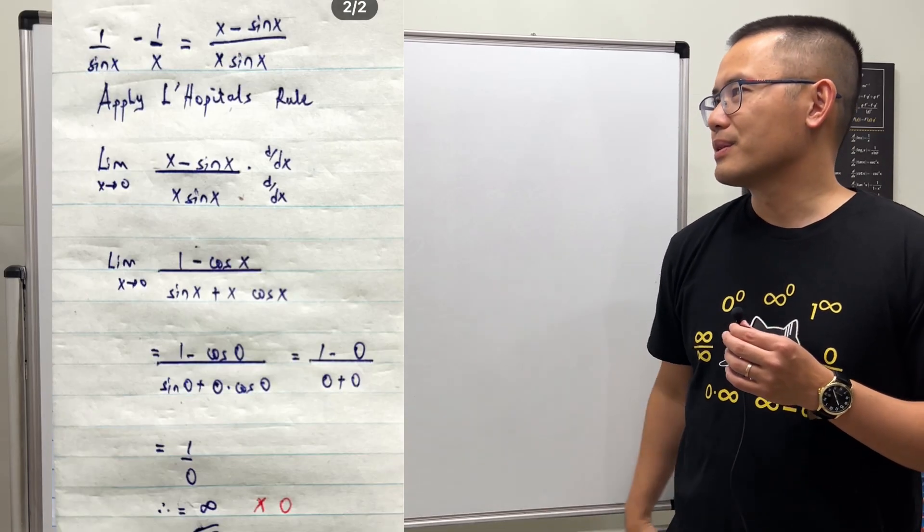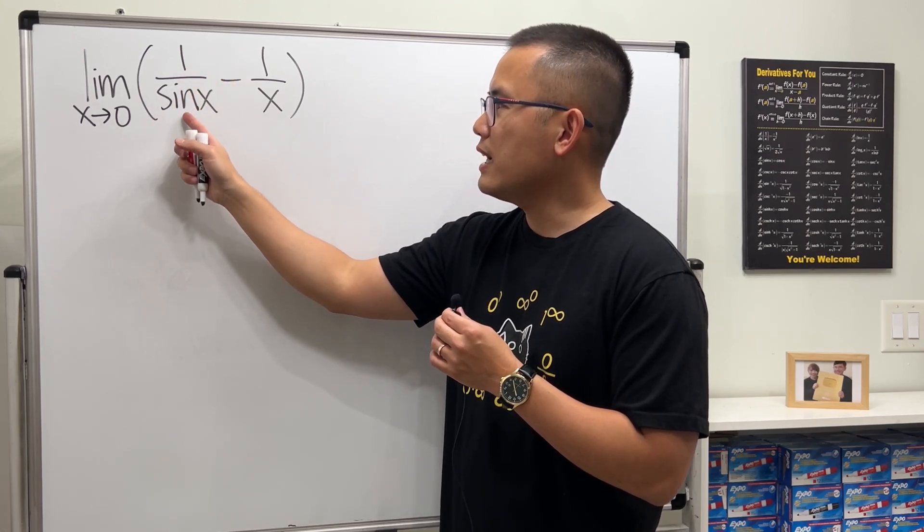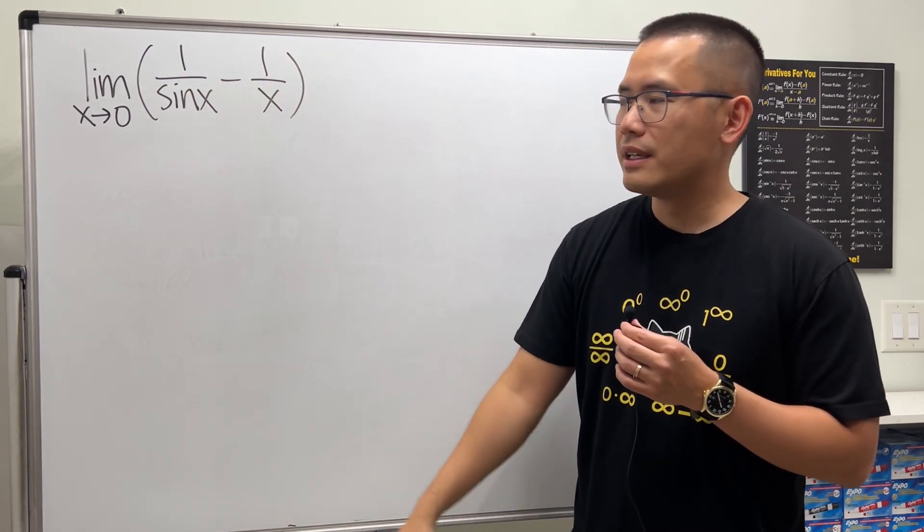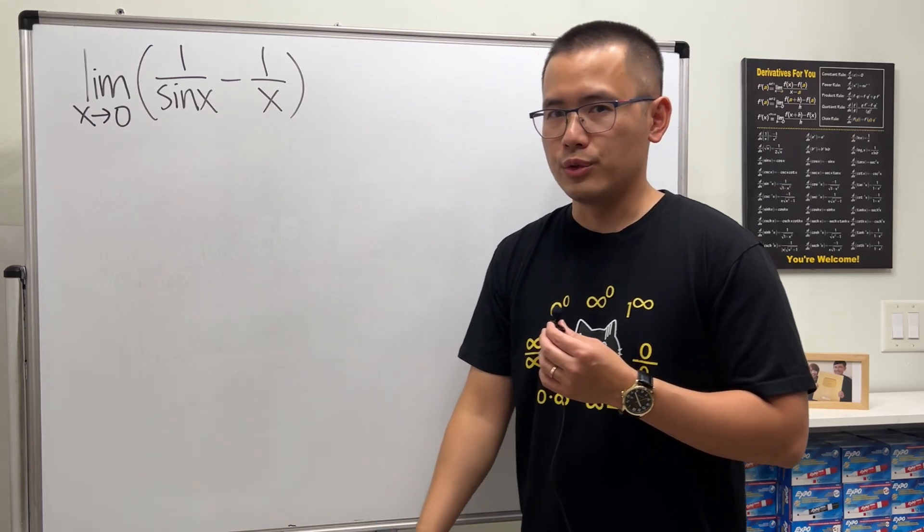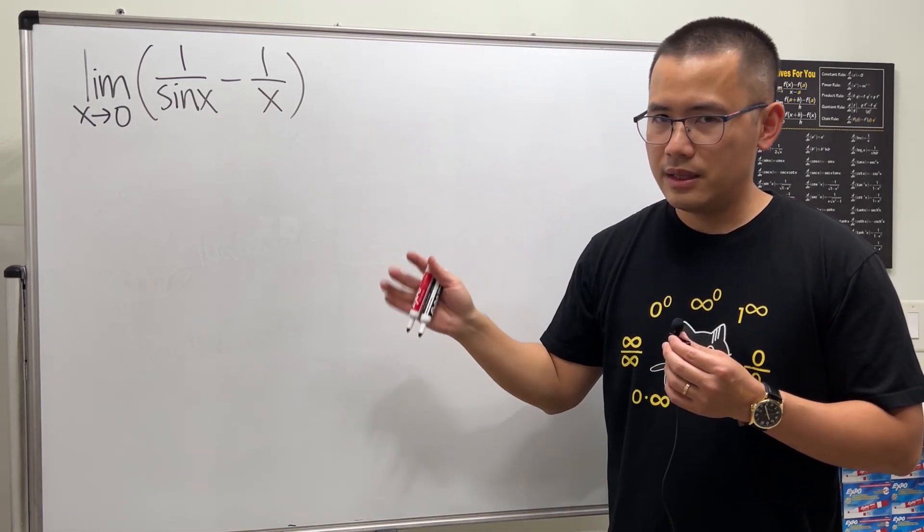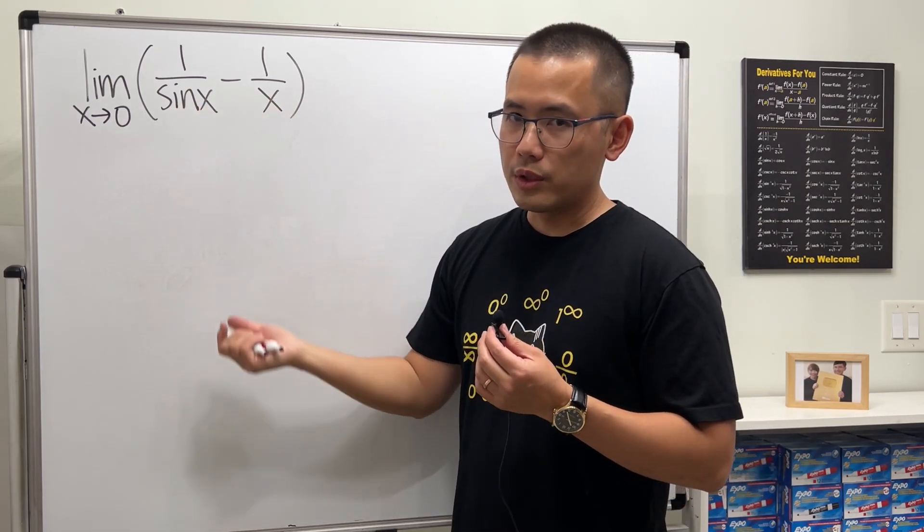Okay, let's take a look. We have the limit as x approaches zero of 1 over sin(x) minus 1 over x. I'll just tell you if we push through into all the x's we will run into trouble, but it's okay.